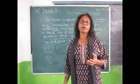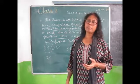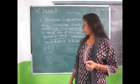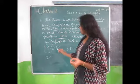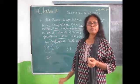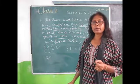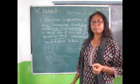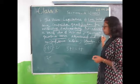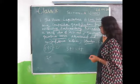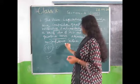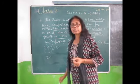Now, quorum. Quorum is the minimum number of members that must be present when a house session is going on. What is the minimum number? It is one-tenth of the total number of members. If 545 is the total membership, then one-tenth means 55 members must be present when the house session is going on. That is called quorum.